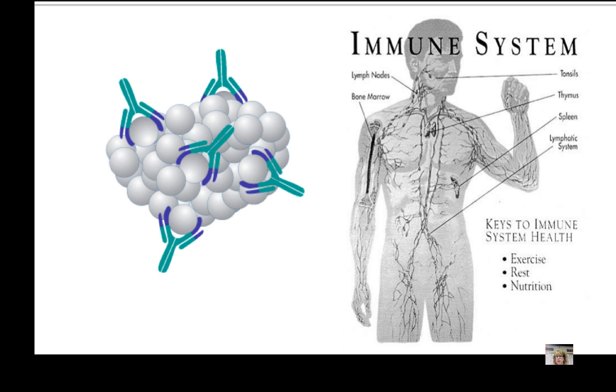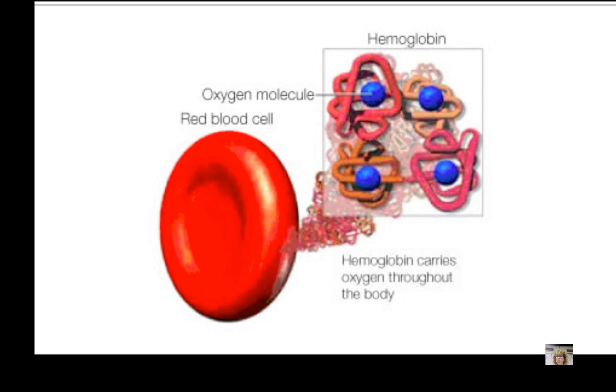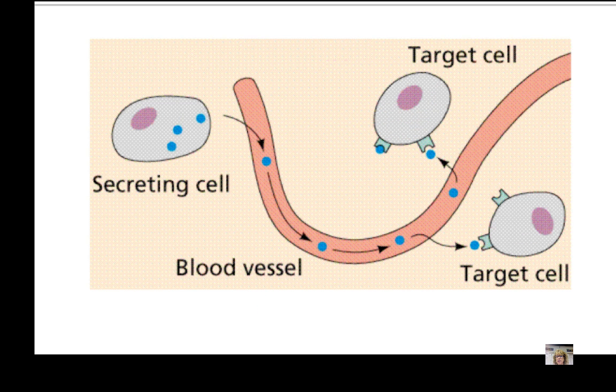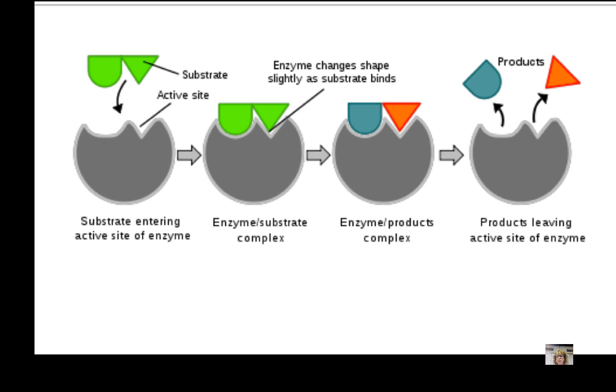The fourth group is defensive proteins. They protect against disease and the main example are antibodies. Transport proteins transport other substances. For example, hemoglobin carries oxygen in the blood. Signal proteins coordinate activities in organisms. Hormones are the major type of signal proteins. Enzymes are an important group of proteins. They are catalysts. They change the rate of a chemical reaction without being changed themselves. Enzymes promote and regulate most chemical reactions in cells.